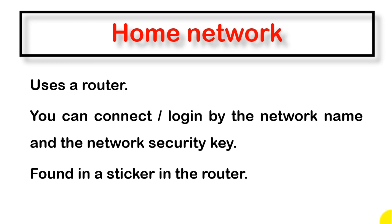When you buy a new router, where do you find the network name or the network security key? You will find it on a sticker on the router — this sticker is found at the bottom of the router. Read the sticker and you will find your device name, your security key, and so on.